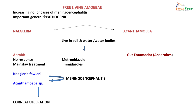Usually they live in soil and water bodies. Naegleria is aerobic while Acanthamoeba is anaerobic. They have no response to main treatments of amoebiasis like metronidazole or other amoebicidal drugs, and they usually cause meningoencephalitis. Acanthamoeba species can also cause corneal ulceration in some patients who are using contact lenses in water containing these amoeba trophozoites.